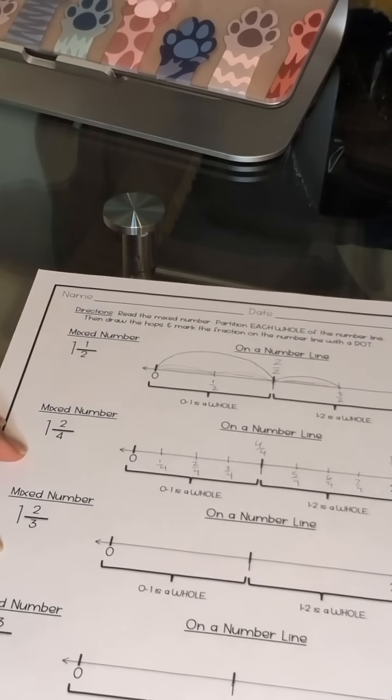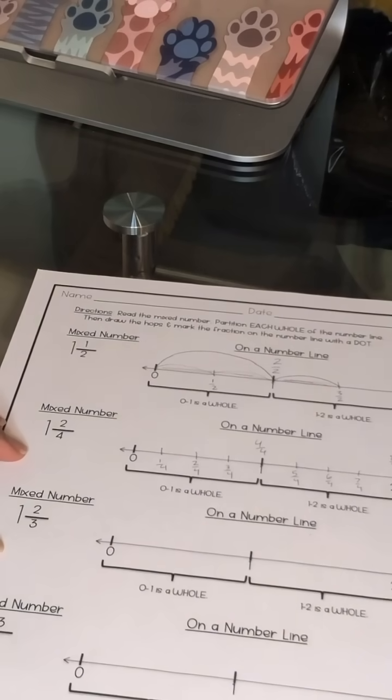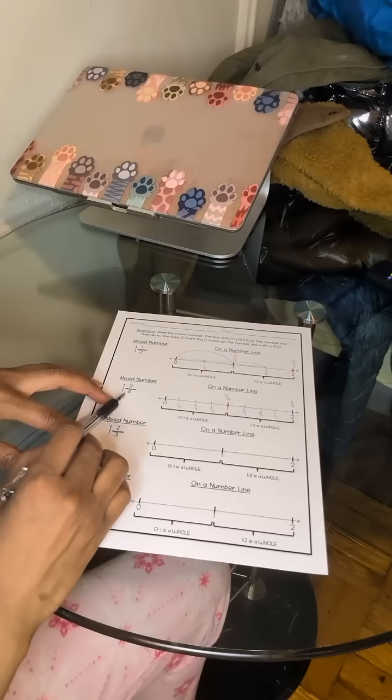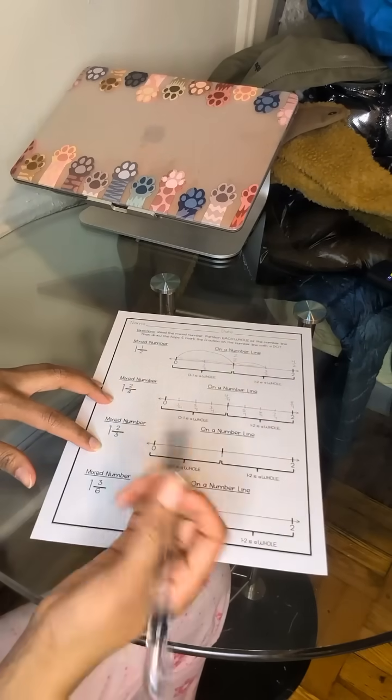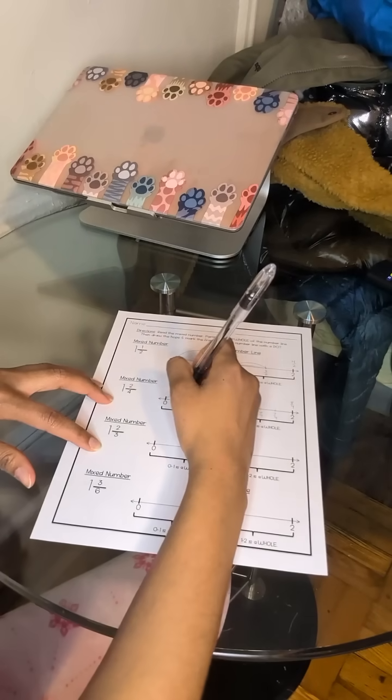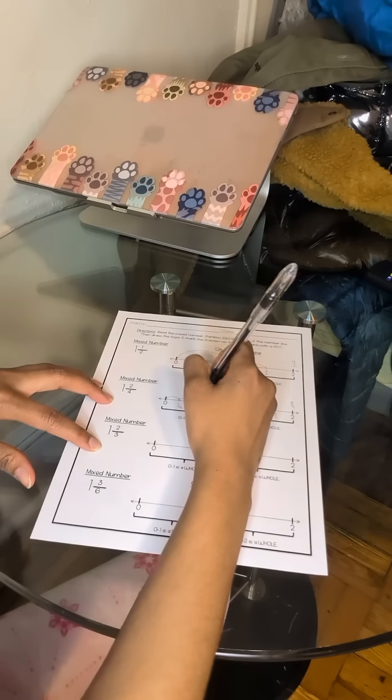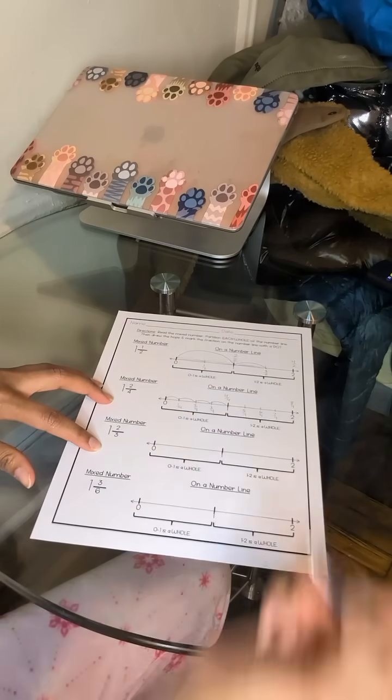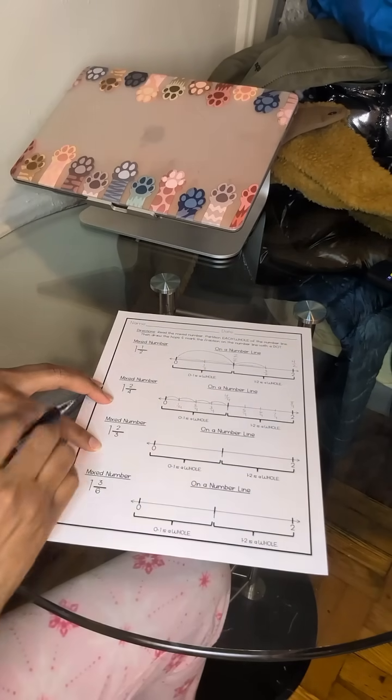So how would we show this? Since our number line is broken into fourths, we can do single jumps, fourths, one, two, three, four, that's one whole. And then we...